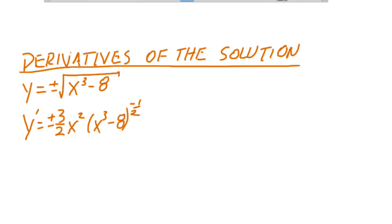If we take the derivative of the solution, we get y prime is equal to plus or minus 3 halves x squared times x cubed minus 8 to the negative 1 half.